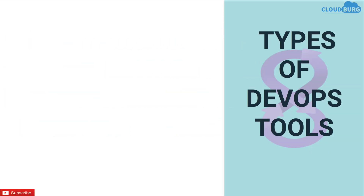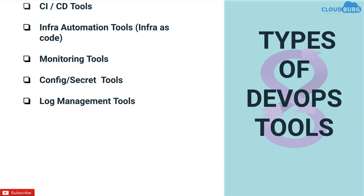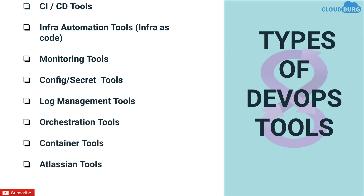Now let's move to the next topic which is types of DevOps tools. There are many types of tools like CI-CD tools, infra automation tools, monitoring tools, configuration tools, log management tools, orchestration tools, container tools, Atlassian tools, and incident management tools. There are multiple DevOps tools that come under these categories, but we are not going to discuss every tool. We will pick the top demanding and easy-to-learn tools. So now let's start and discuss every type one by one.